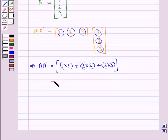And so this is equal to the matrix with element 1 plus 4 plus 9 which is equal to 14. So we have AA dash is equal to matrix with element 14.